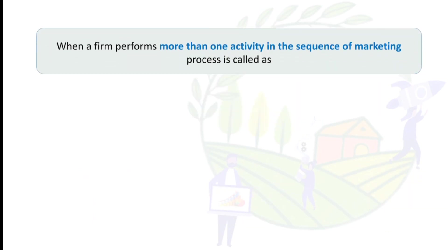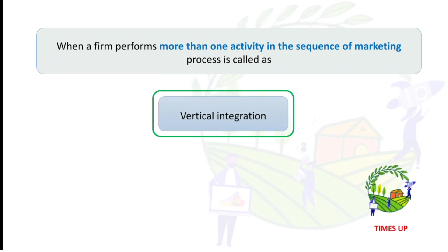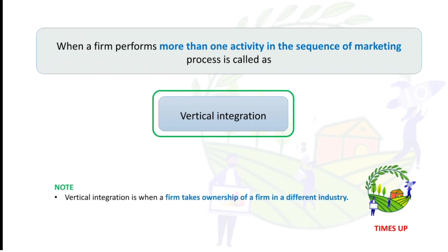When a firm performs more than one activity in the sequence of the marketing process, it is called vertical integration. Vertical integration is when a firm takes ownership of a firm in a different stage of the industry.